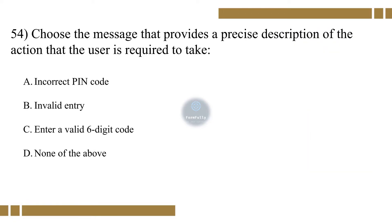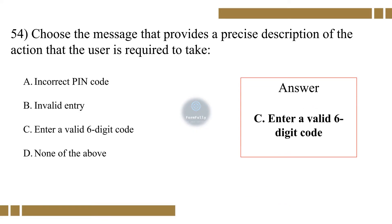Question 54. Choose the message that provides a precise description of the action that the user is required to take. Option A: Incorrect PIN code. Option B: Invalid entry. Option C: Enter a valid six-digit code. Option D: None of the above. The correct option is C.